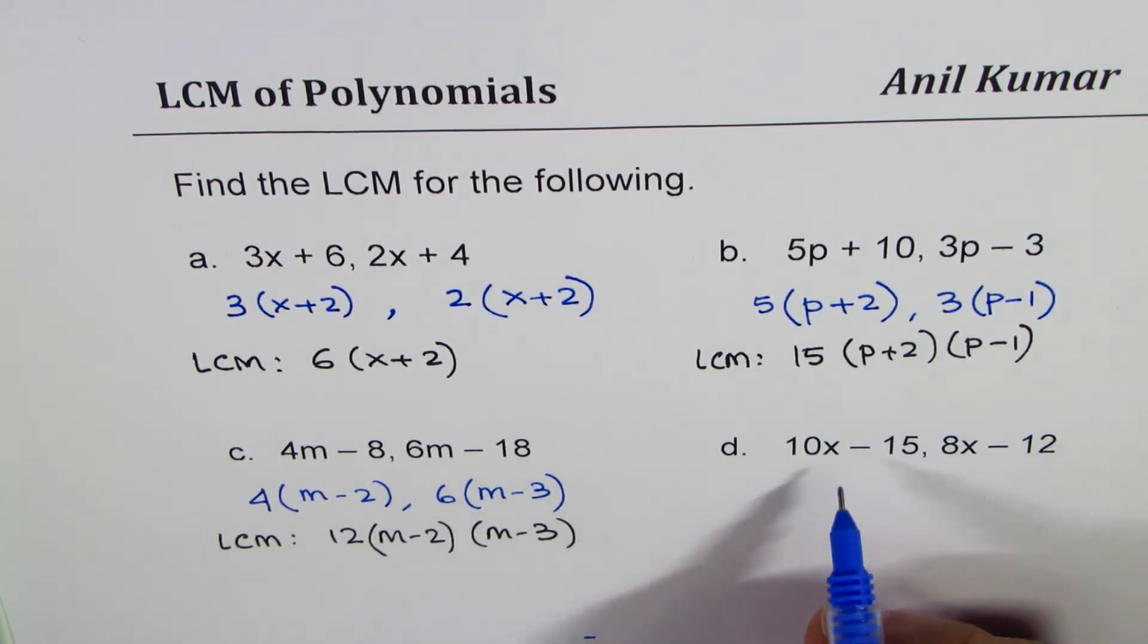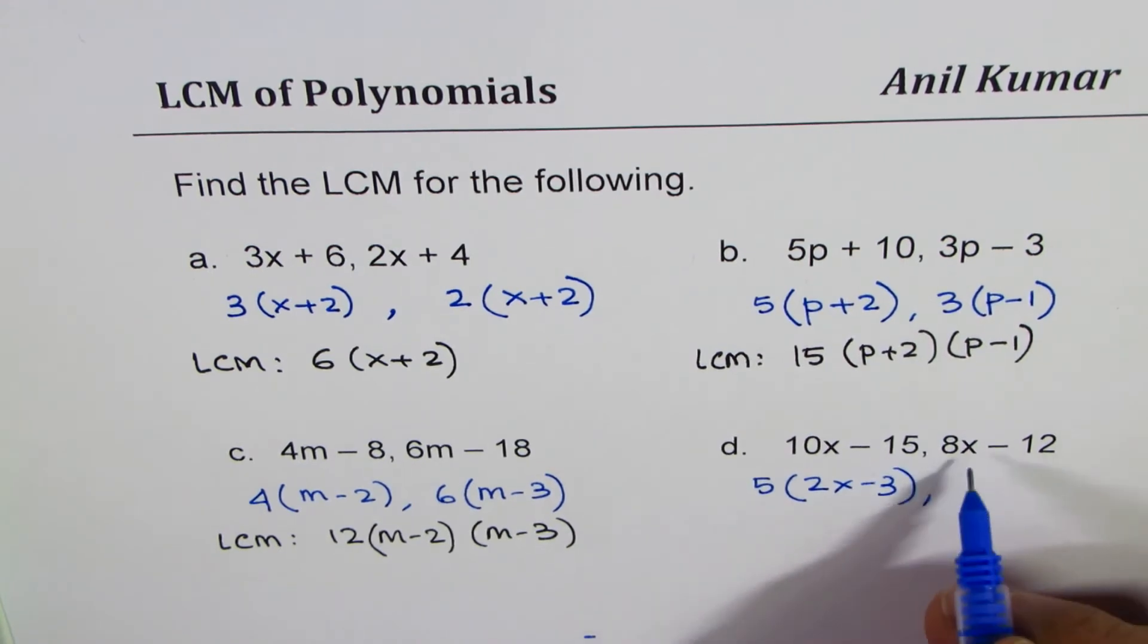Let's do the last one here. 10x minus 15, 5 is a common factor. So we could write 2x minus 3. 8x minus 12, 4 is a common factor. So we get 2x minus 3.